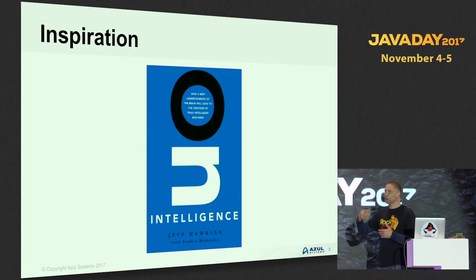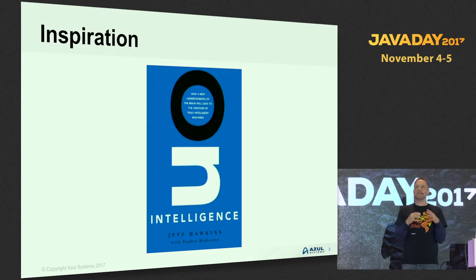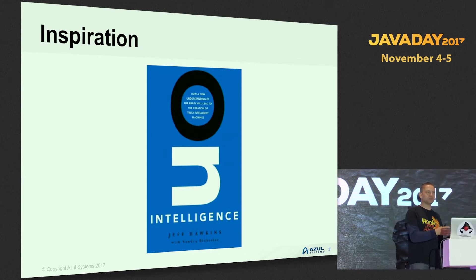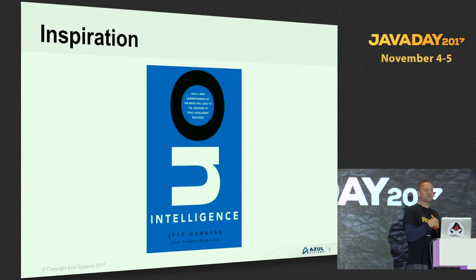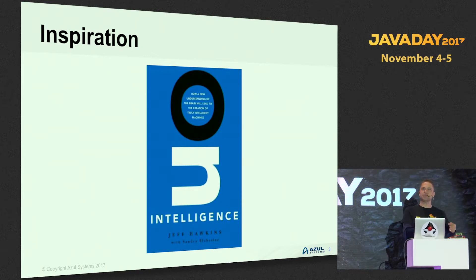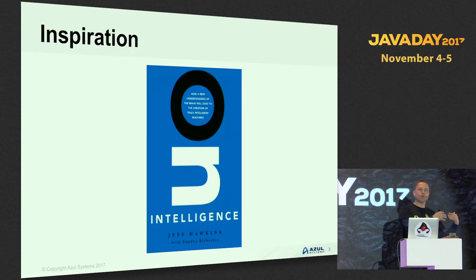Jeff then went on to write this book called On Intelligence, which was his theory — having studied how the brain works — of how you could take that and turn it into machine learning, making a machine work in the same way as a human brain.